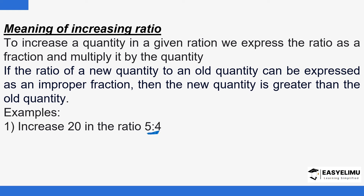You have the given ratio, and in the process of trying to express it as a fraction, you end up with an improper fraction. That means the new quantity is greater. So the original quantity should be less than the value we are trying to calculate. This will help you tell whether you are right or if there are issues with your answer. The rule is: express the given ratio as a fraction and then multiply it by the original quantity.